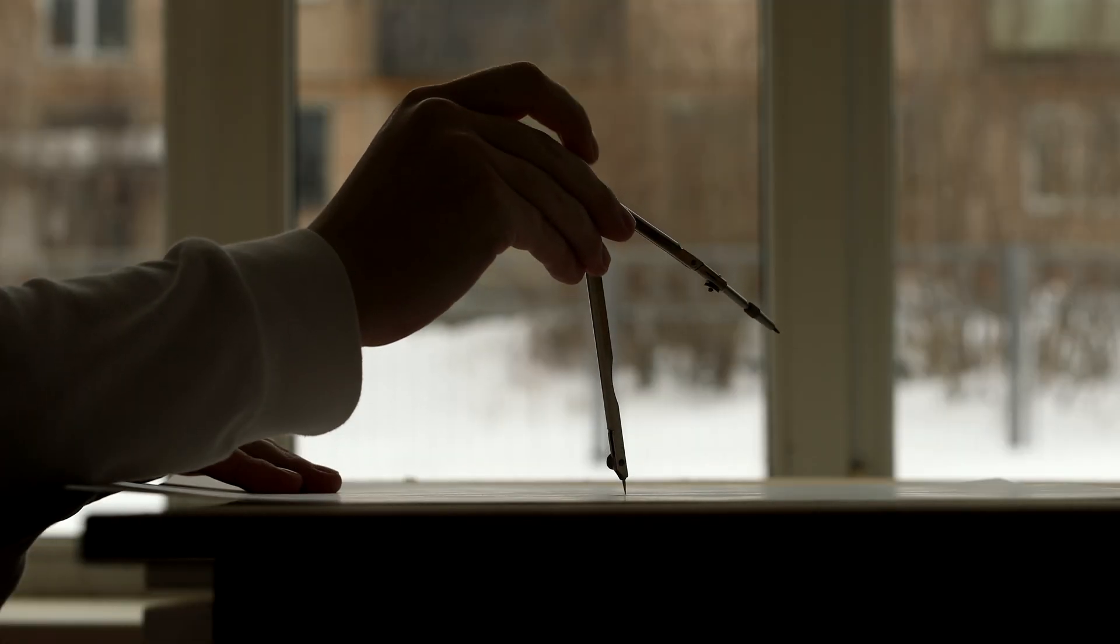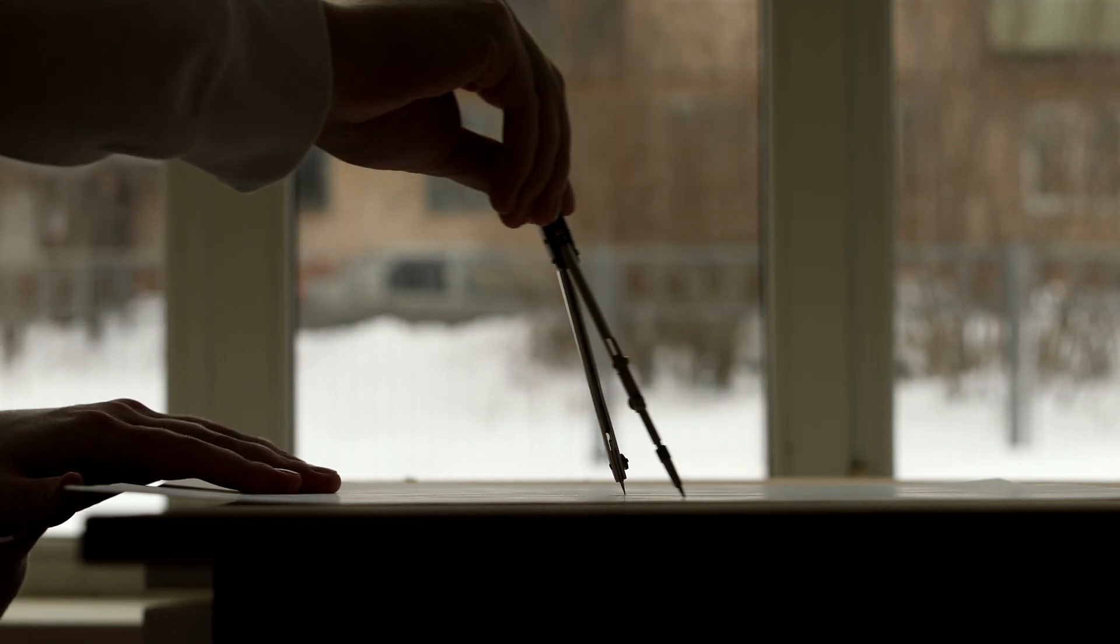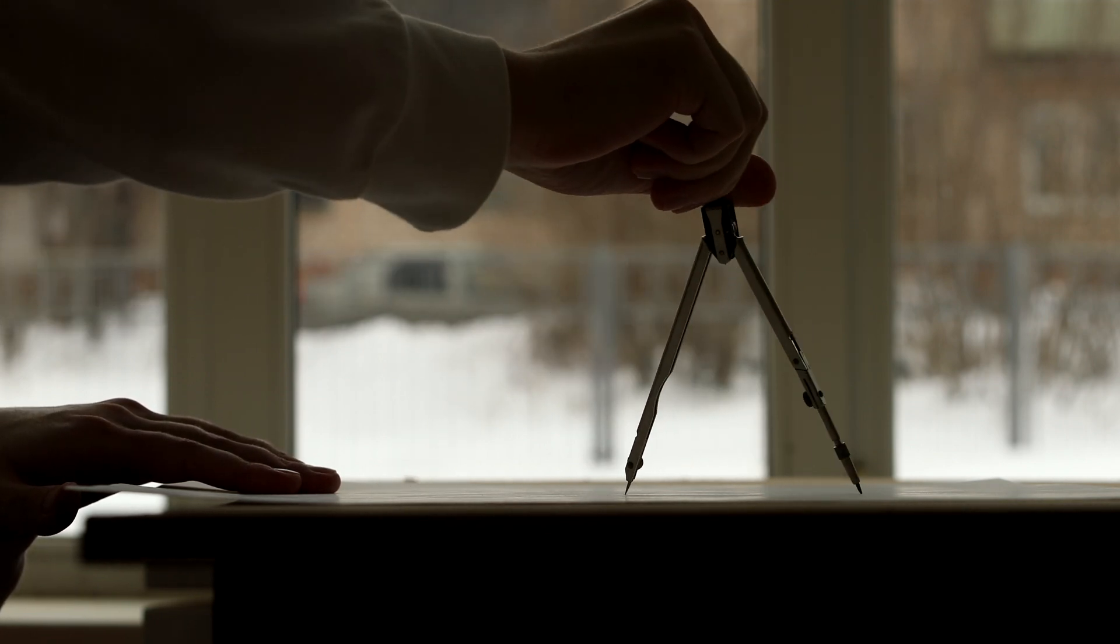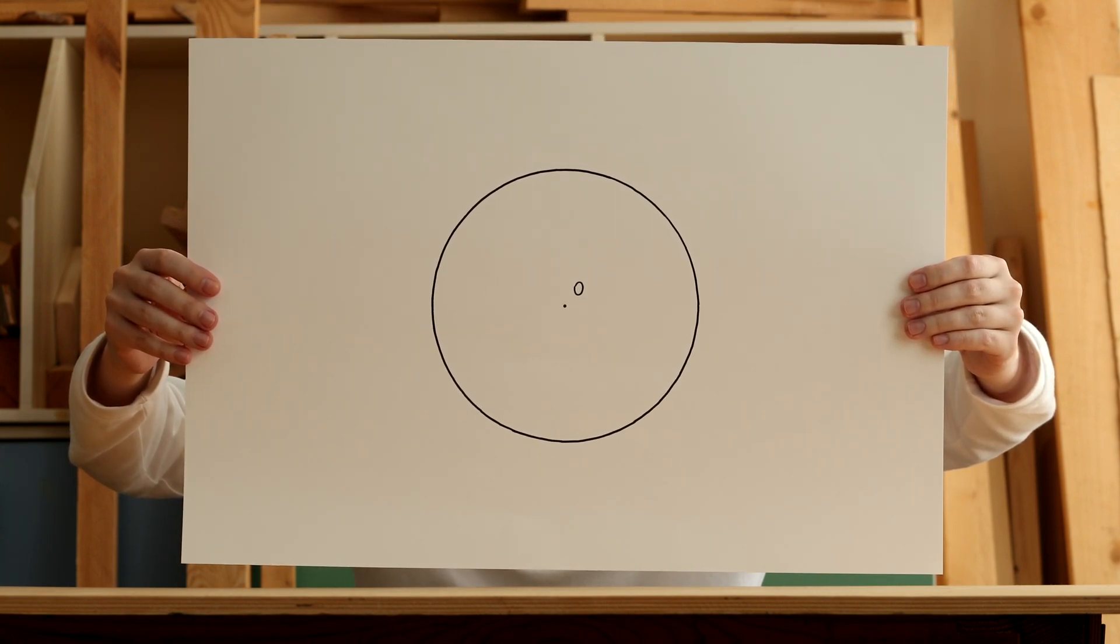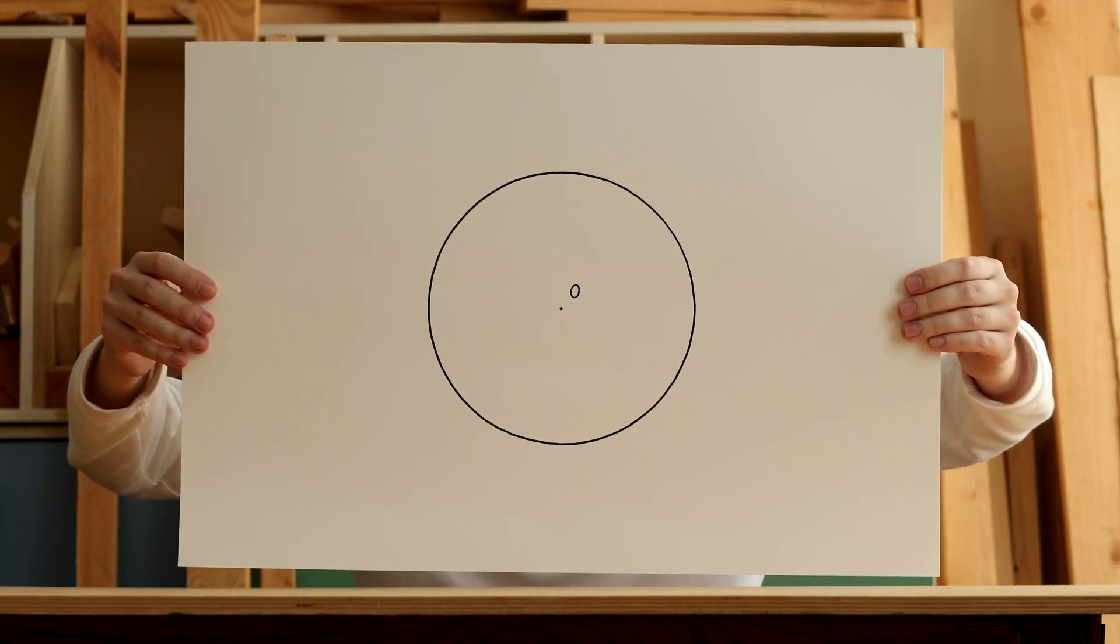I am Pavel Kubarkov. In this video I will show how to construct a tangent line to a circle at a given point on the circle using a compass and a ruler.